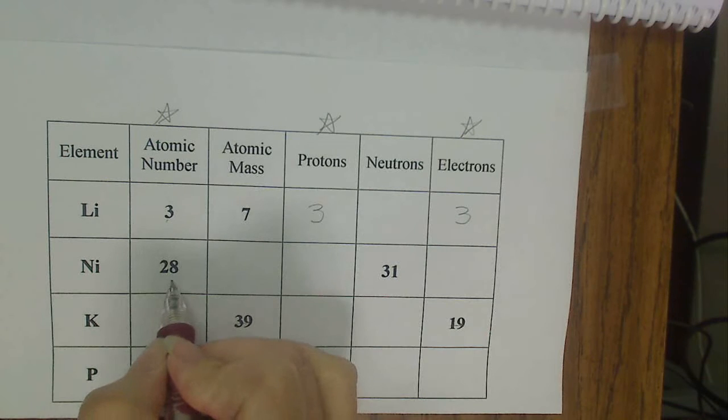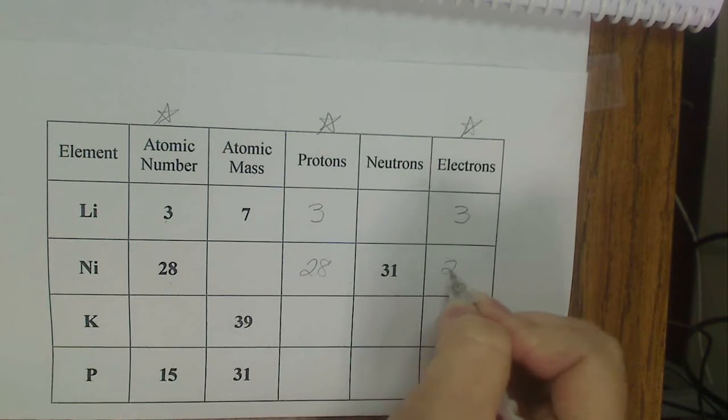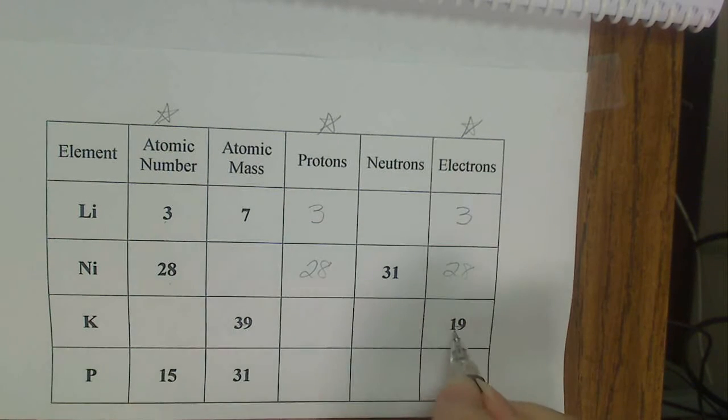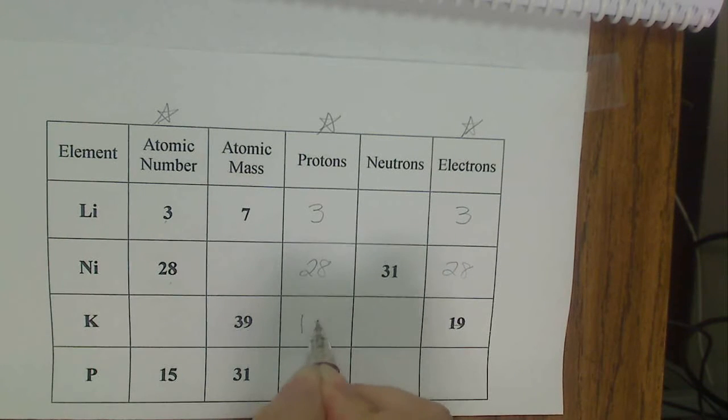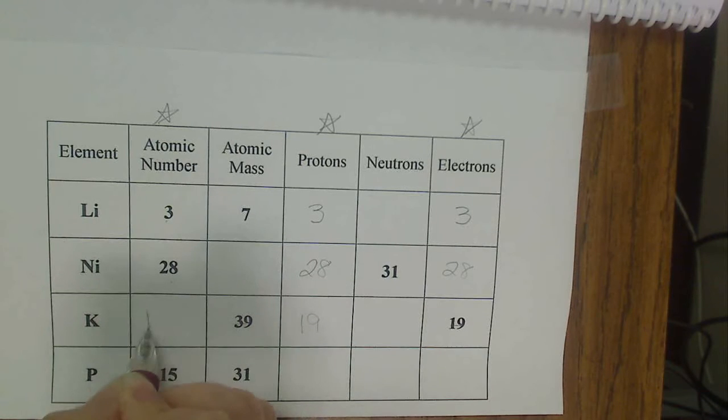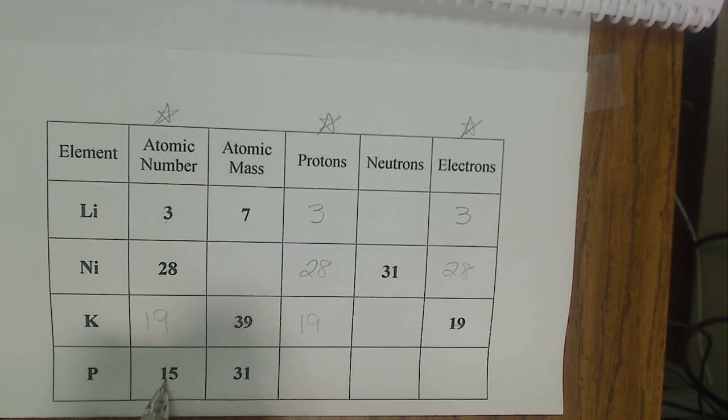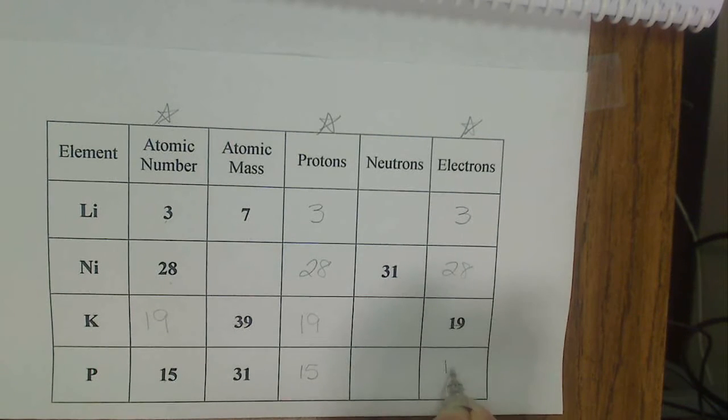If my atomic number is 28, my protons are 28, and my electrons are 28. Here I don't know the atomic number, but I can look over here and see that I have 19 electrons, which means I have 19 protons and 19 for the atomic number. I have the atomic number here, 15, so I know my protons is 15, and I know my electrons is 15.